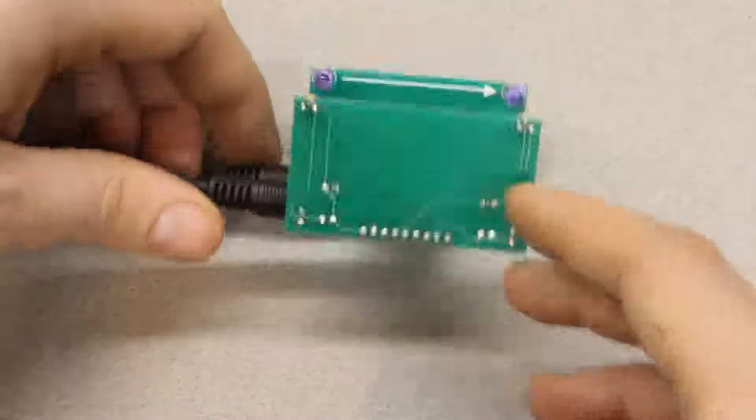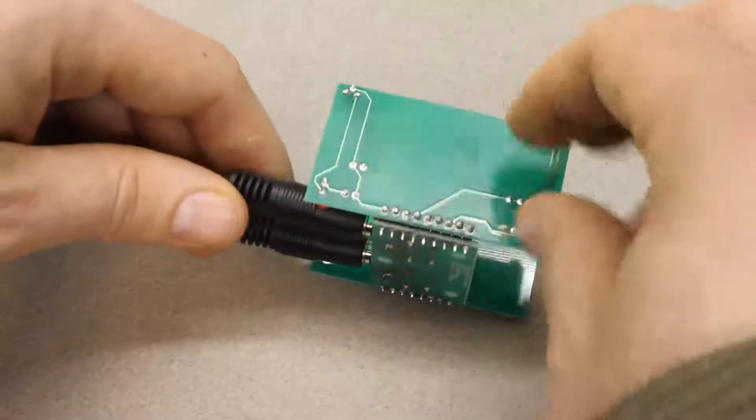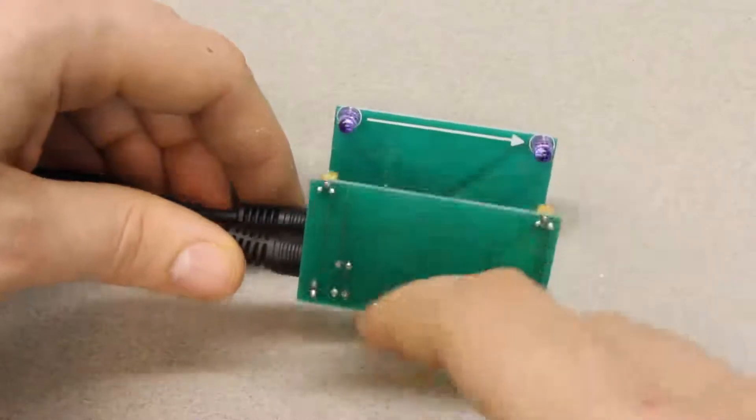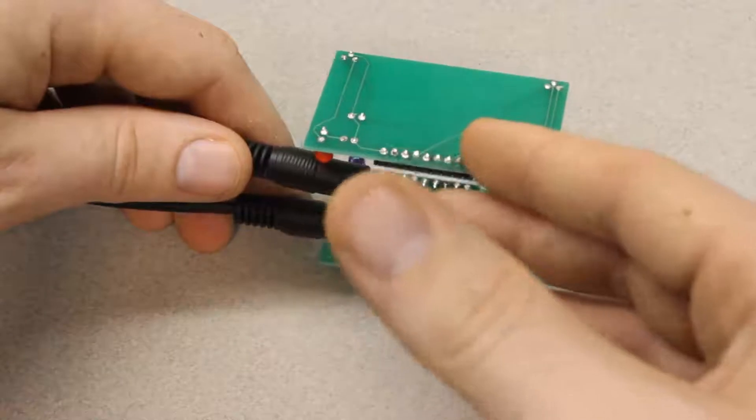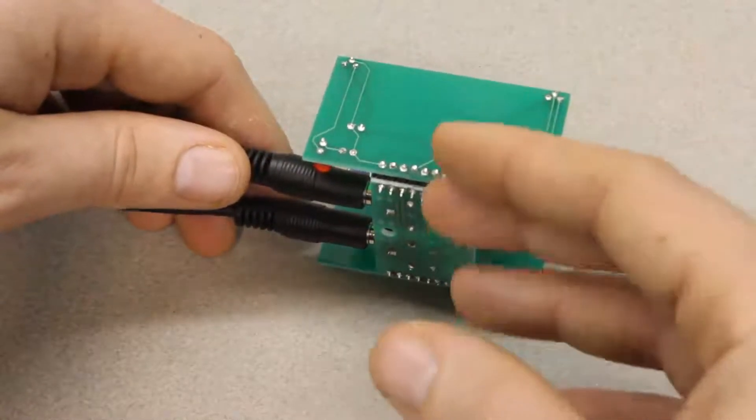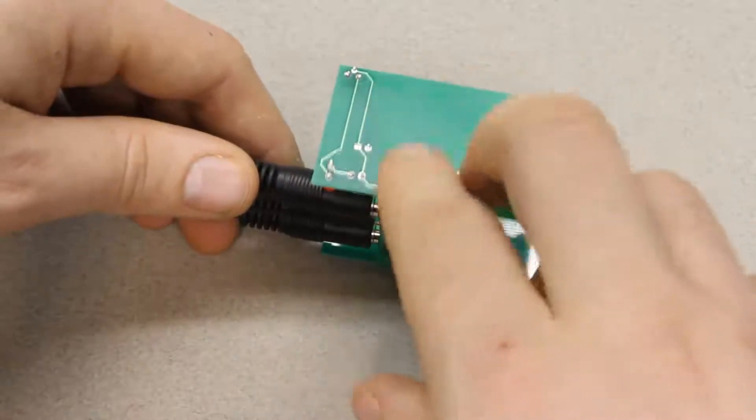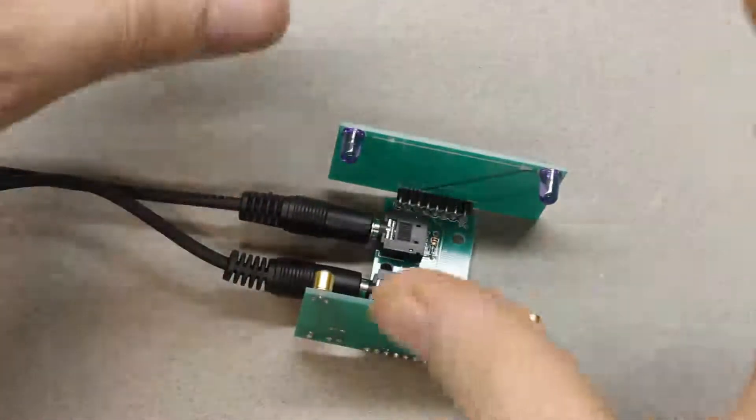The other improvement that I did was before I had this socketed system so that you could disconnect these side boards from the bottom board, and now everything's soldered together. The problem was sometimes that socketed system was getting jiggled around from the recoil of a gun, and now being soldered directly together everything's a lot more firm and it's not going to get jostled around as easily.